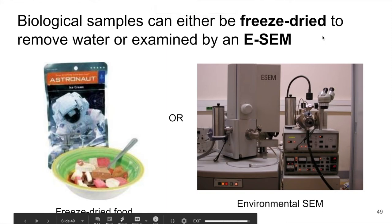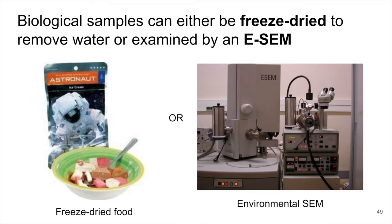Let's talk about some specialized applications of the SEM. We just talked about why we need a high level of vacuum in the SEM chamber, and this creates problems. If we want to look at biological samples, putting them in a vacuum takes them out of their natural environment. These biological samples tend to have water, which creates gas in a vacuum. There are two different approaches we can take to examine them.